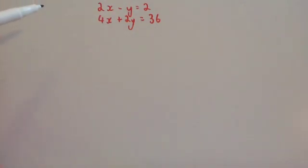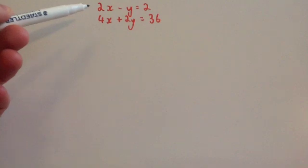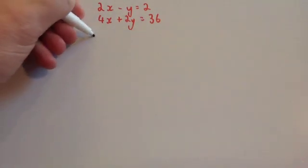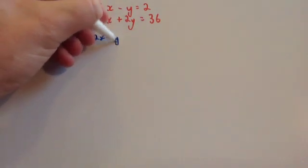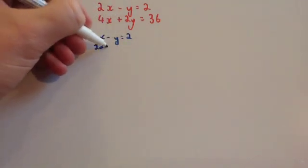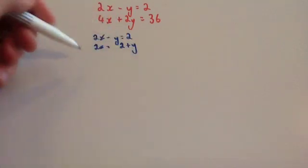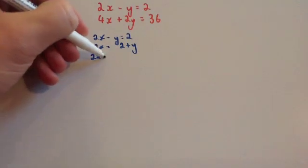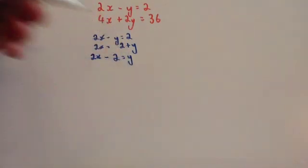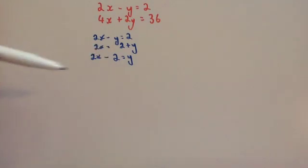Here we've got the two simultaneous equations. The objective is to make x or y the subject of one of them. Looking at the top one, we can easily make y the subject. So we've got 2x minus y equals 2. Adding y to both sides gives 2x equals 2 plus y, and taking 2 away from both sides gives 2x minus 2 equals y. So y equals 2x minus 2.